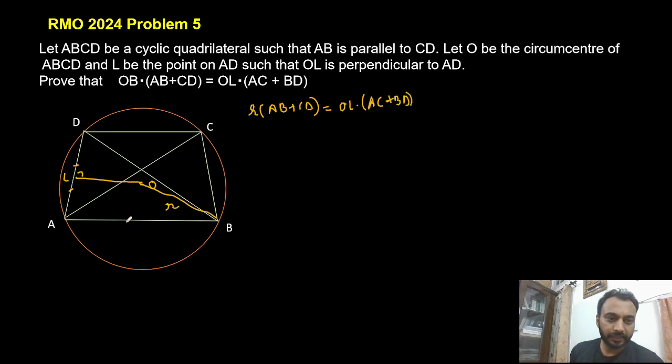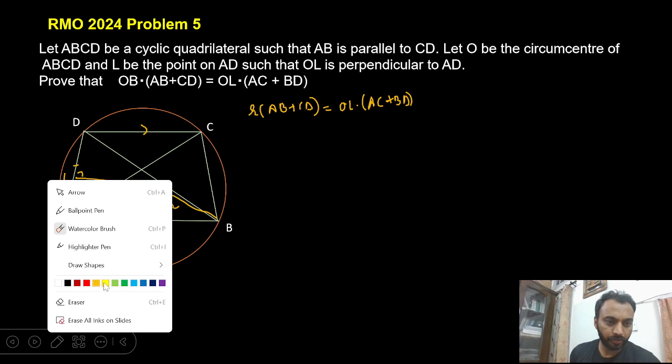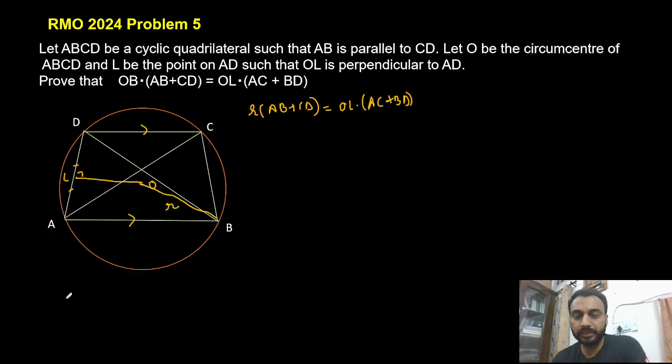Now as AB is parallel to CD, it is a trapezium and we know that if a trapezium is a cyclic quadrilateral, then it must be an isosceles trapezium. You can prove this very easily. So we are not going to that part. AD is equal to BC and ABCD is isosceles trapezium.